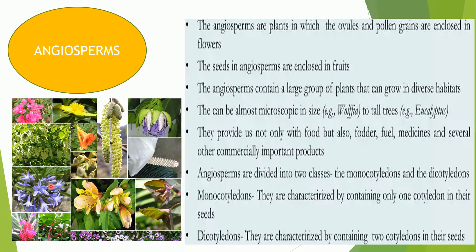The next group of the plant kingdom are angiosperms. So what are angiosperms? These angiosperms are the flower-bearing plants — the true flowering plants — wherein the seeds are enclosed in a fruit. Once the seeds are produced, they will be enclosed in fruits. These angiosperms are the most highly evolved plants of the plant kingdom.